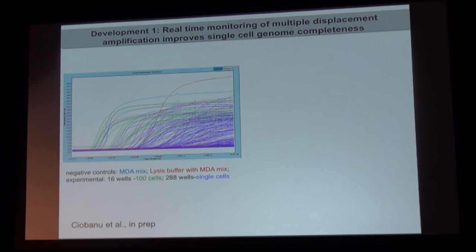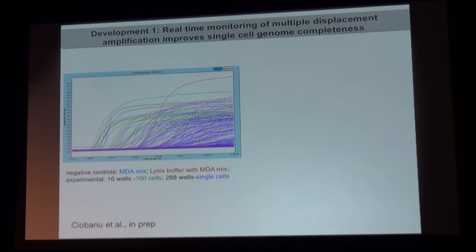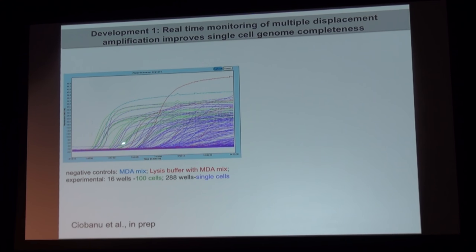One lesson is that we need to monitor the multi-displacement amplification in real time. Using a qPCR machine, we look at the accumulation of DNA by the synthesis reaction. Doina ran some controls — blue and red — and then 100 cells in a single well versus one cell in multiple wells. These purple lines are individual wells starting to take off and then saturating. You can see that the more cells you put in a well, the more amplification you get, which makes perfect sense.